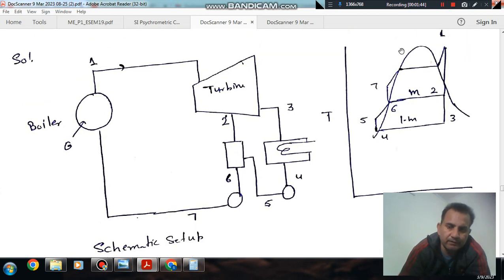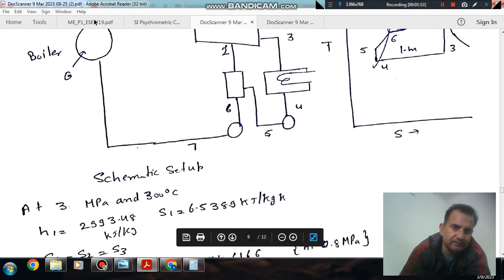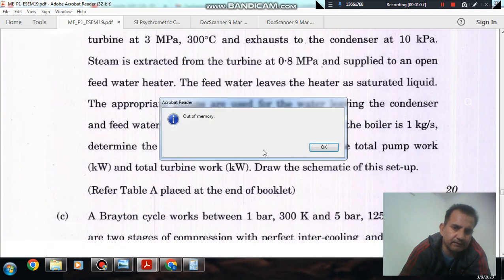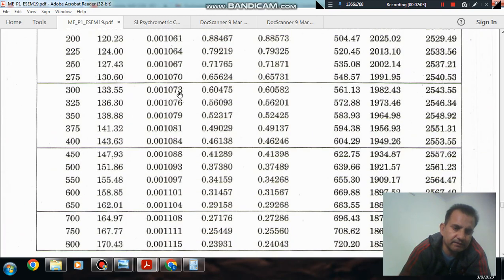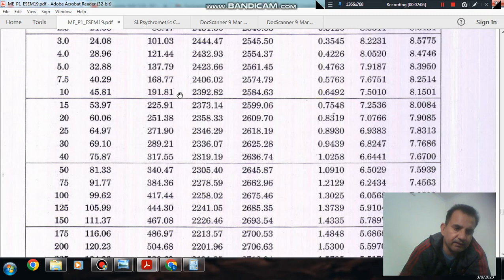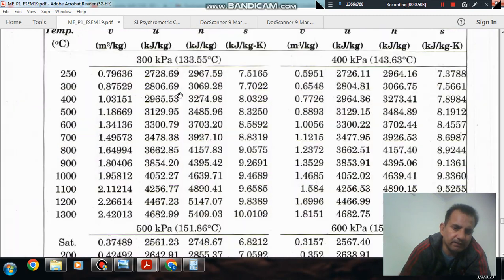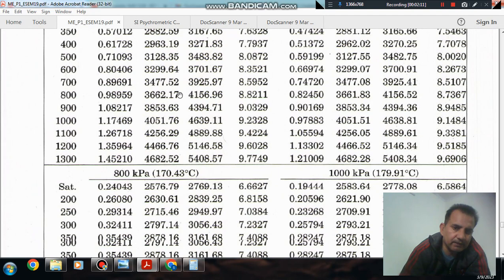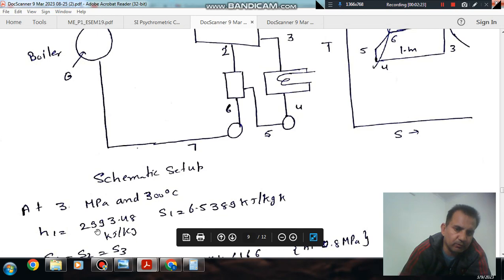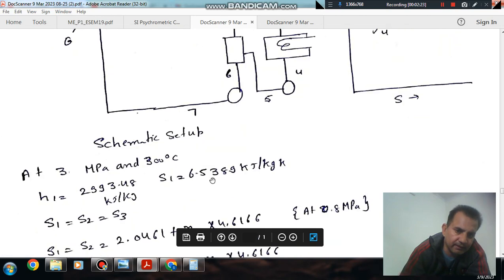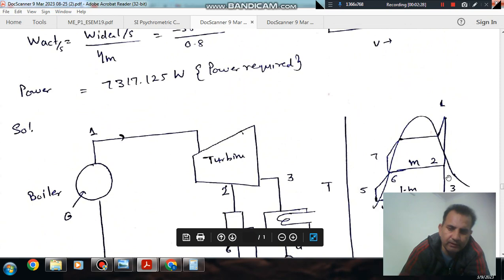So these are the seven points according to the cycle. Point 1 is the turbine entry point where the pressure is 3 MPa and temperature is 900°C. For this pressure and temperature we can see the enthalpy and entropy. So we can see that the entropy at point 1, 2, and 3 is same.